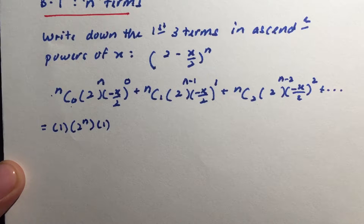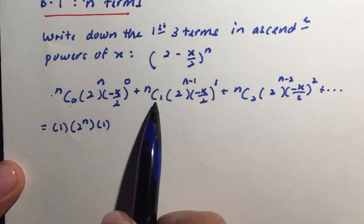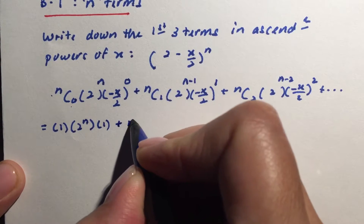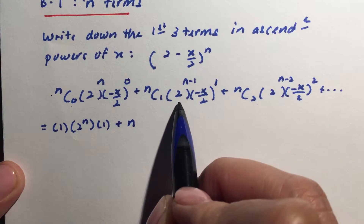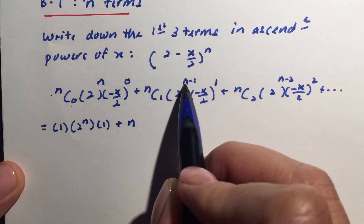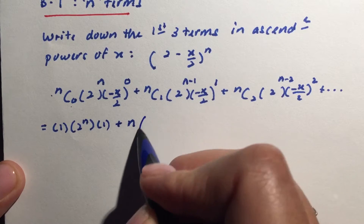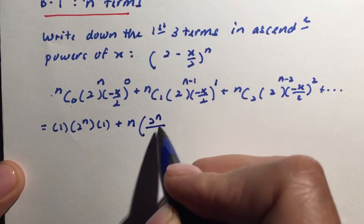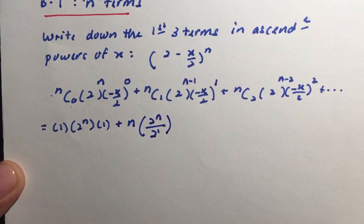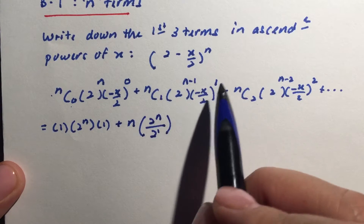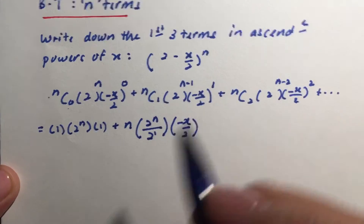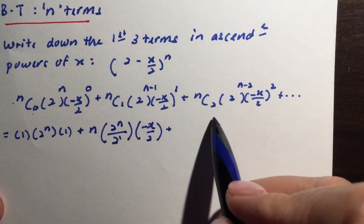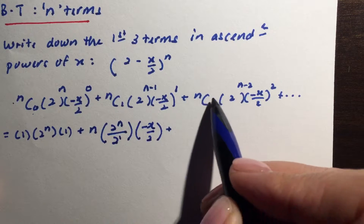For nC1, try it on your calculator: 3C1 gives 3, 5C1 gives 5 — so nC1 is just n. For this term, I'll use the law of indices to break it up: 2^(n-1) becomes 2^n divided by 2^1. Anything to power 1 stays the same.